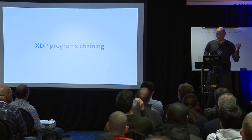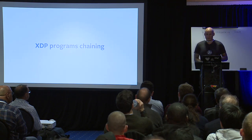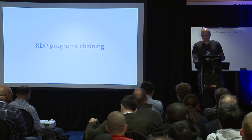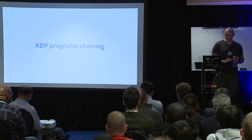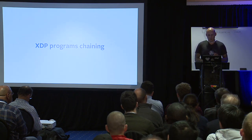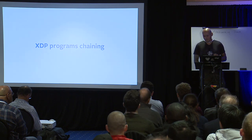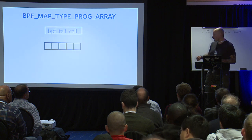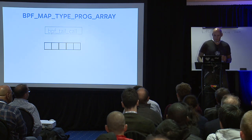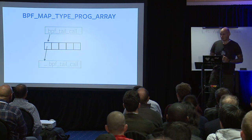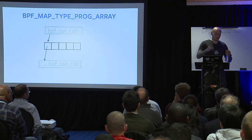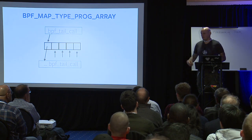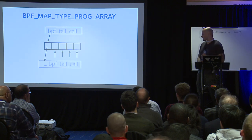Someone asked about XDP program chaining. The current limitation is that you can attach only a single XDP program to an interface. What we came up with is a super small root BPF program attached to the eth0 interface. It has a BPF program array, and its only job is to check if something is registered at position zero of that array — if so, pass control flow to that program. That program runs its logic and in the end checks positions one, two, three, four. If nothing is registered, it performs the default action, which in our case is XDP_PASS.